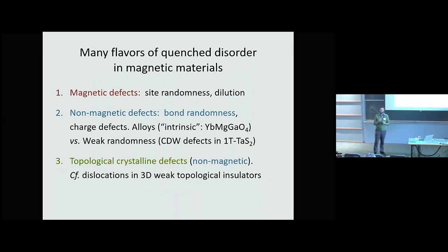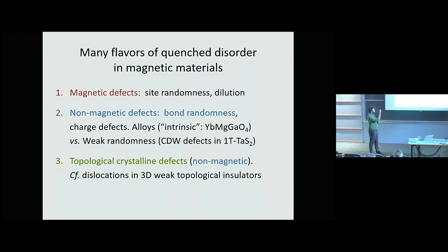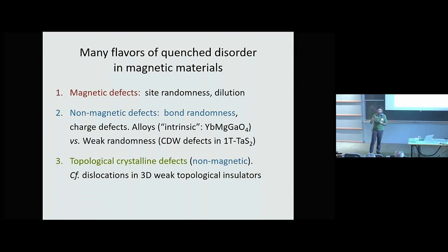We can have magnetic disorder — magnetic impurities, or since we already have a spin model, if we have some dilution and substitute a non-magnetic site for a magnetic site, we remove a spin. That's a kind of disorder on the sites of our magnet. We can also have non-magnetic disorder: bond randomness or energy randomness, coming in the couplings of the spins, from charge disorder or anything done to non-magnetic sites or electric fields.